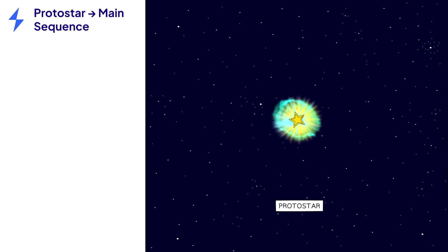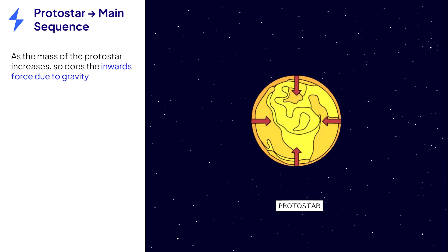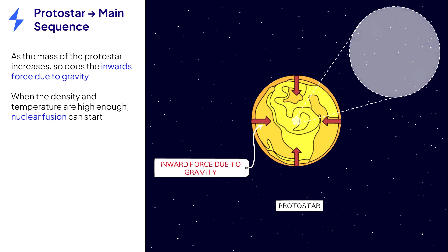Over time, as more and more particles are attracted by strong gravitational forces, the mass of the protostar gradually increases, which further increases the strength of the gravitational forces, which attract more particles, until eventually the temperature and pressure in the centre of the star get high enough so that nuclear fusion can start.